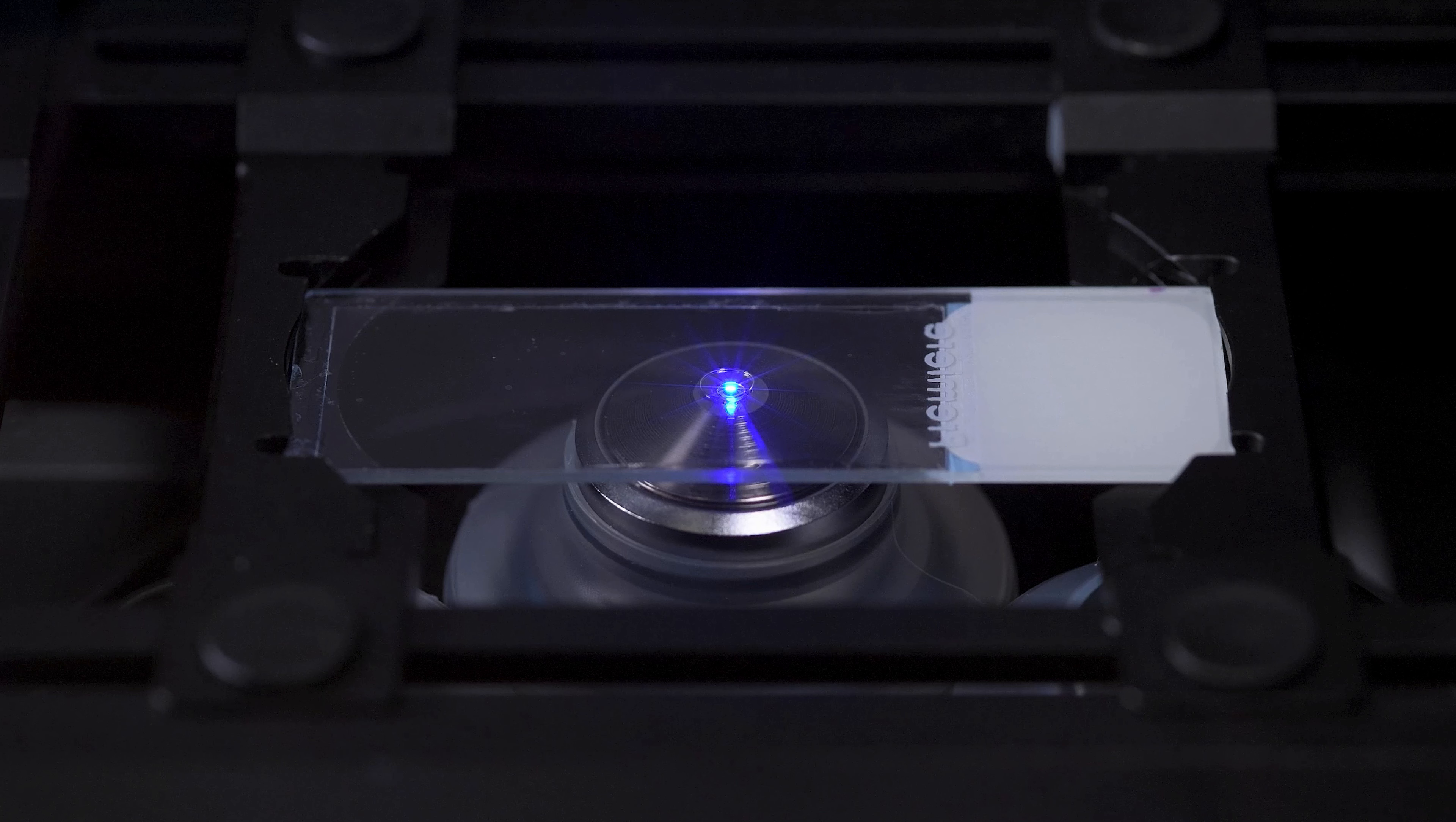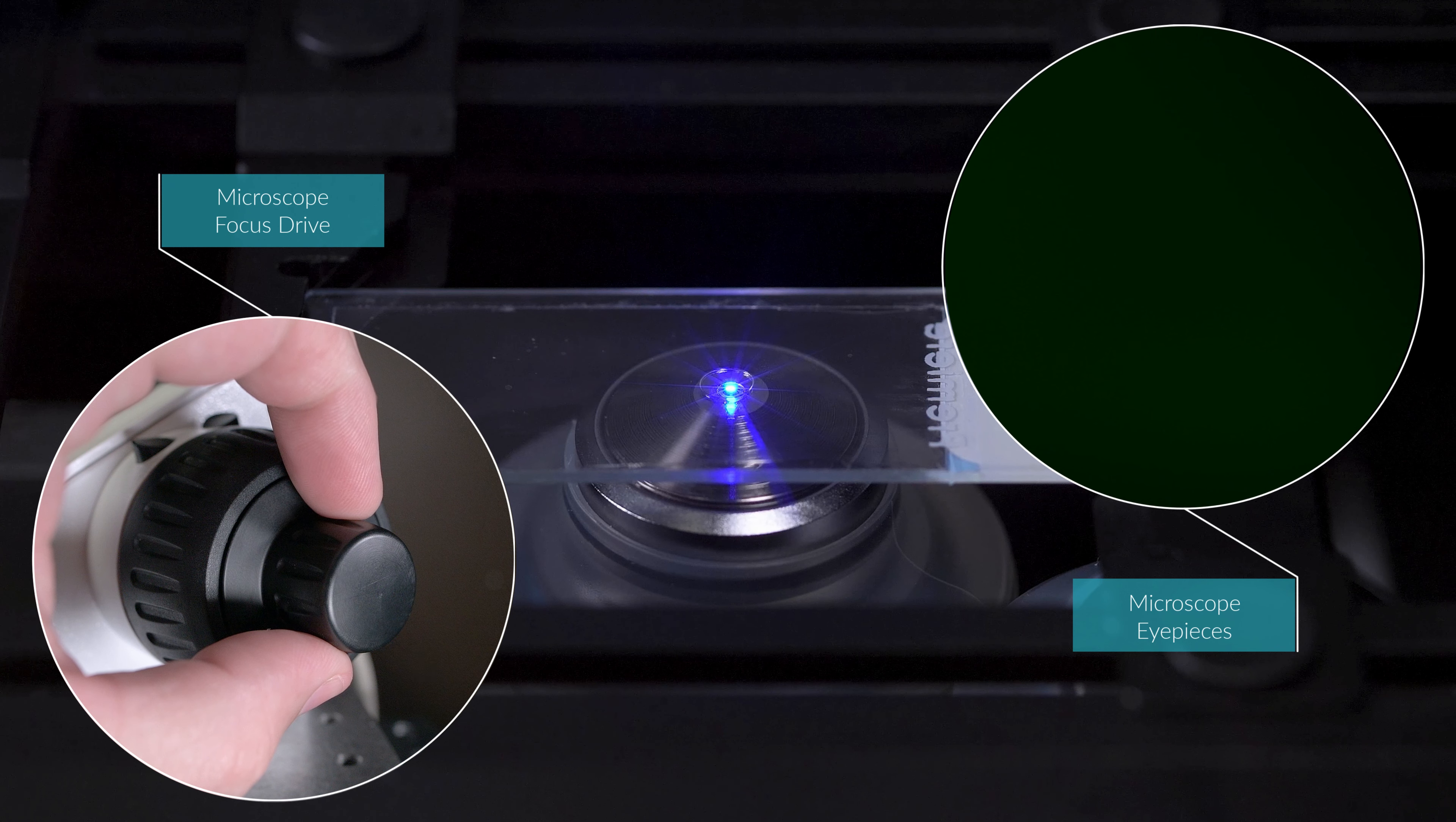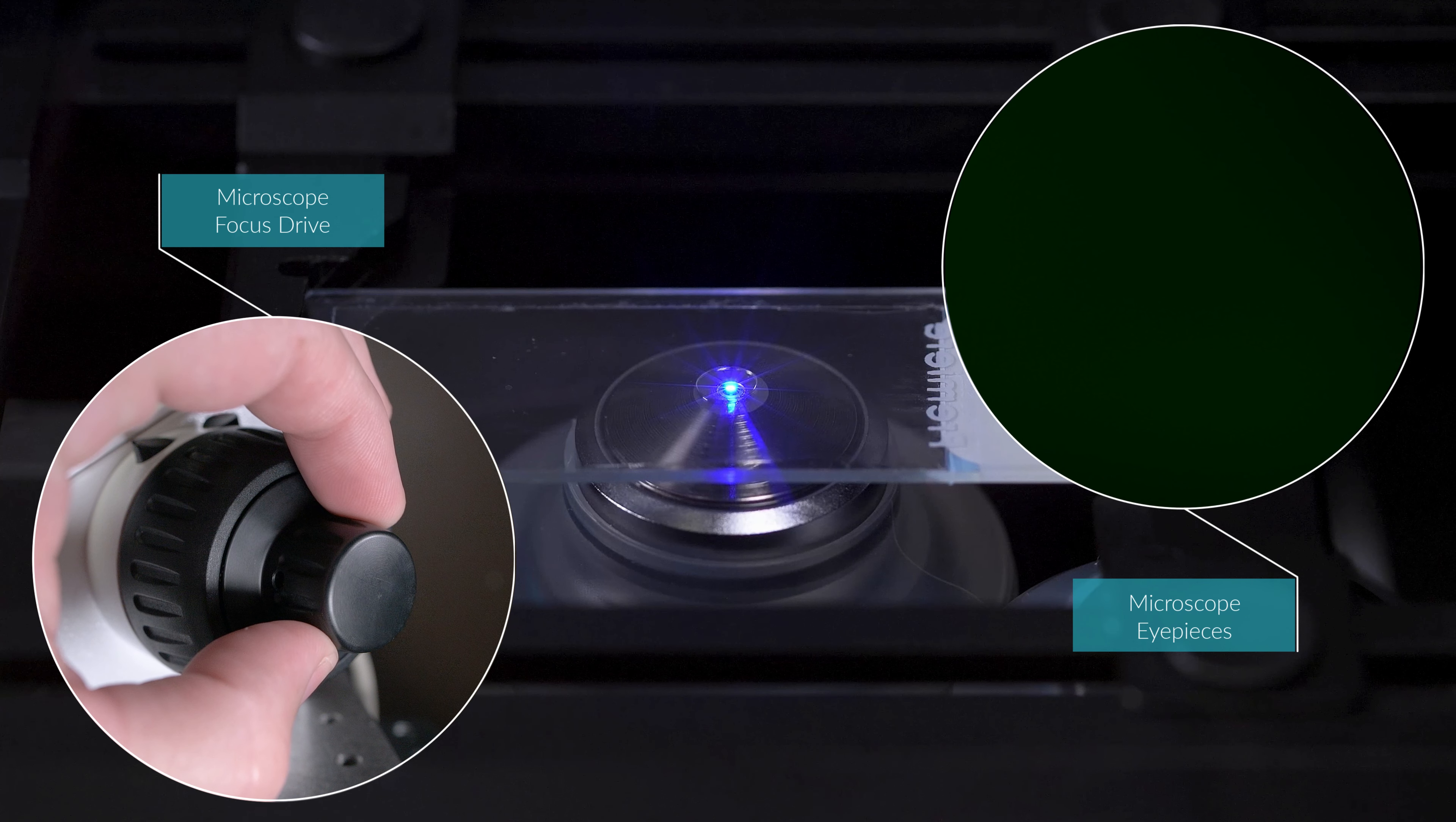Do not use the coarse focus with immersion objectives from this point on. Have a look through the eyepieces of the microscope. If you position the bead of oil over a section, you will likely see some residual out of focus fluorescence from the tissue. Begin slowly rotating the fine focus knob towards the microscope. As you slowly adjust the focus, you should see the entire field of view starting to get gradually brighter and brighter as you get closer to the specimen.